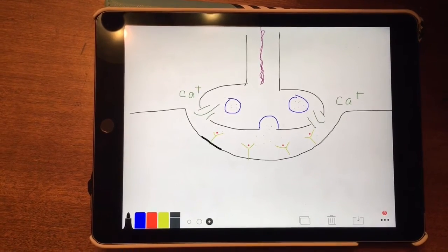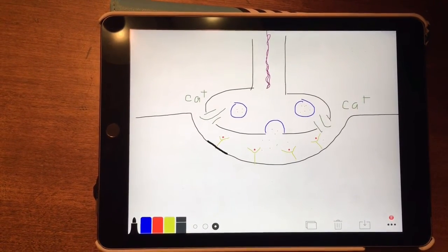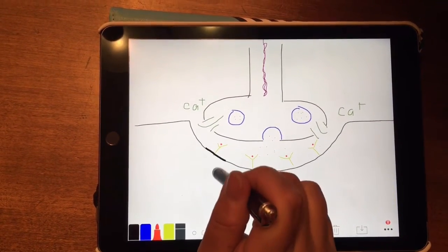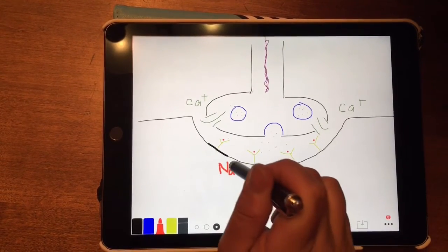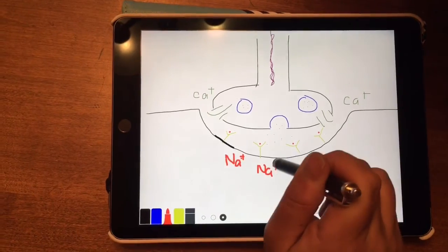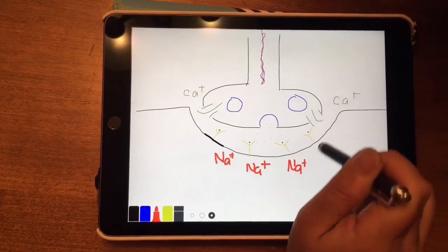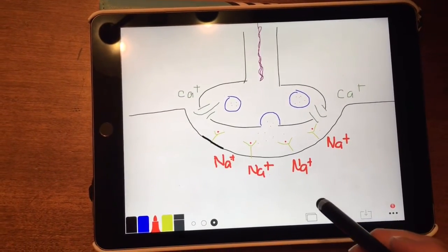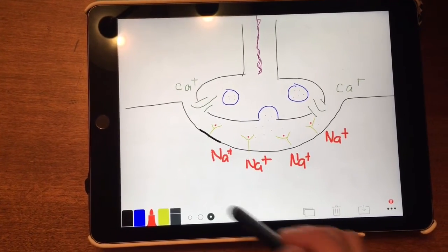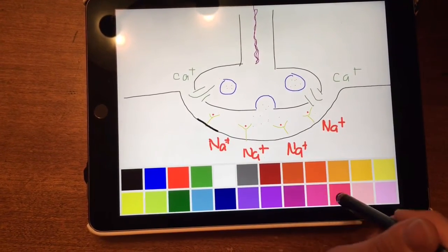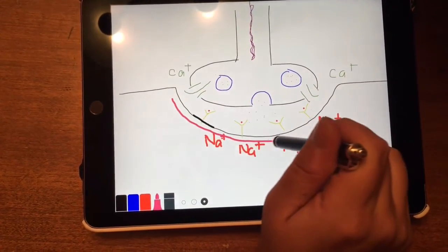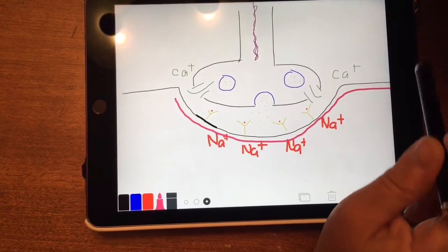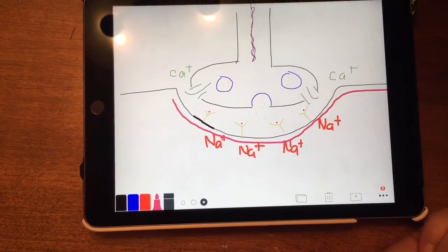The sodium enters into the muscle, and then this causes the action potential which travels along the sarcolemma to the t-tubules. And then that is the beginning stage of a muscle contraction.